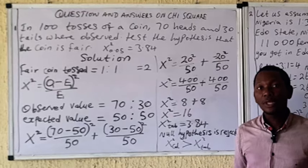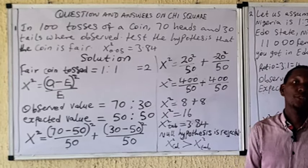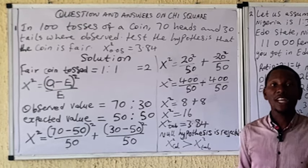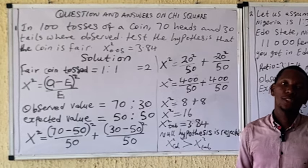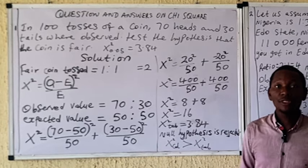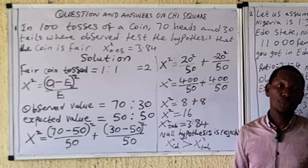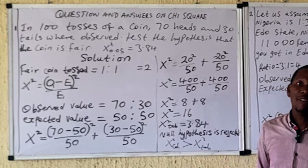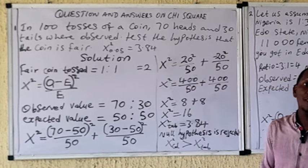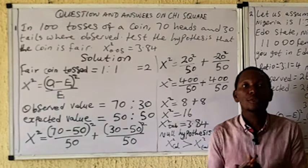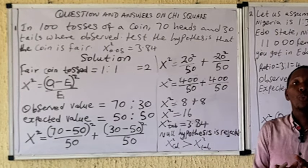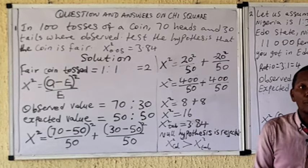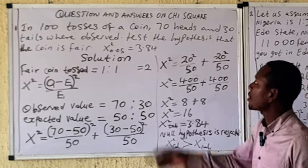Chi-square, as we know, is a kind of test that is used to test categories — to see if they are obeying a particular pattern, or if the association between categories is actually significant or not. We'll be taking a general overview of some questions to see if the observed pattern is obeying a set of rules or is significantly different from what is expected.